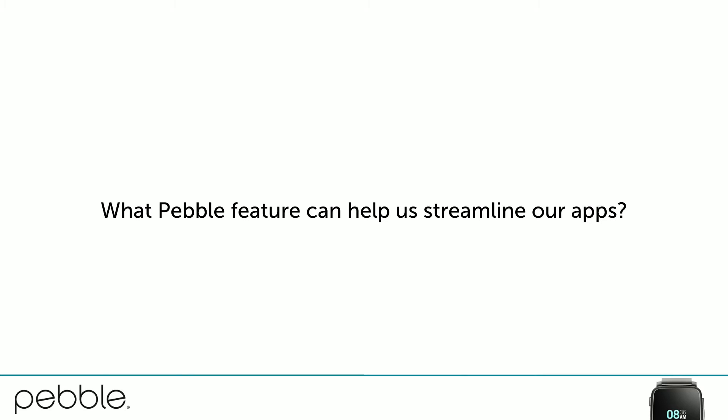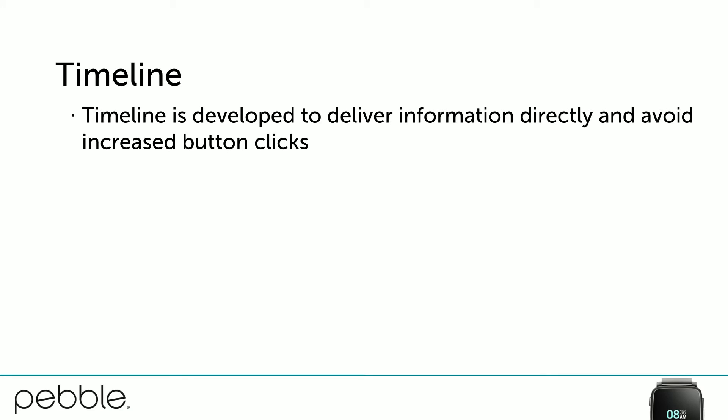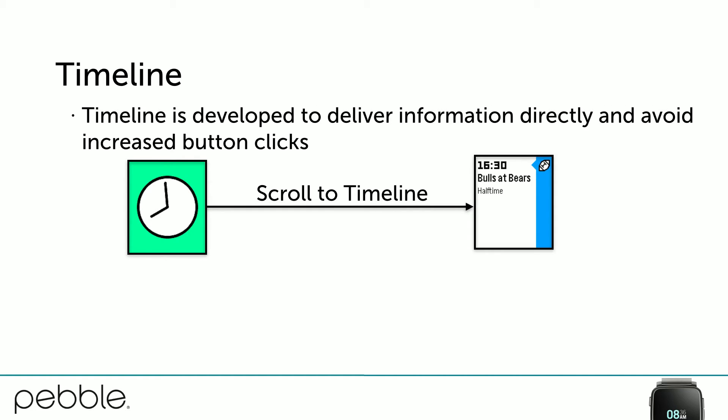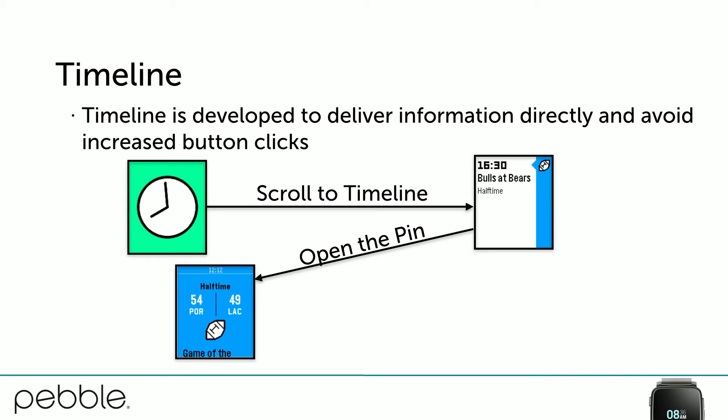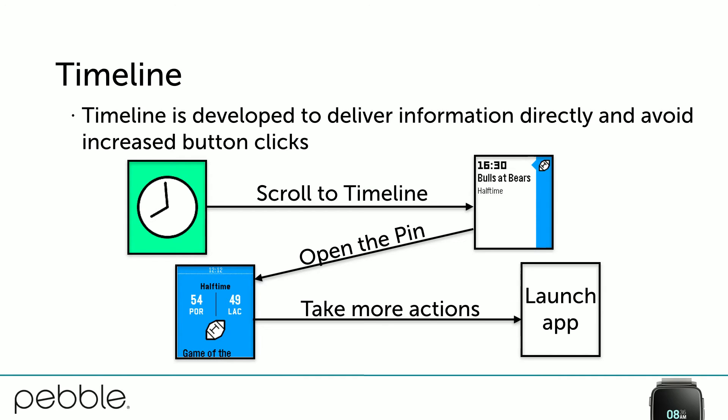We know users don't want to click through buttons, but how do we implement something? What Pebble feature can help streamline the app experience? That's where Timeline comes in. Timeline was developed to directly deliver information and avoid increased button clicks. You start from any watch face, and with one button click scrolling through Timeline, you already have information directly delivered — the time of a game. That's one click. With two clicks you open the pin and have even more information, like the score. With the third click you directly launch the app. We're well within that eight-click maximum and we've delivered a lot of information.